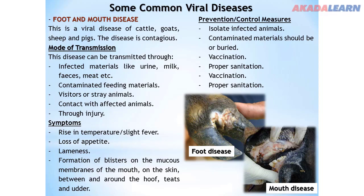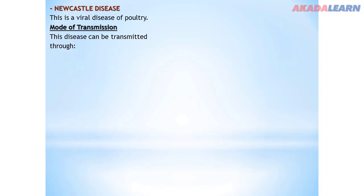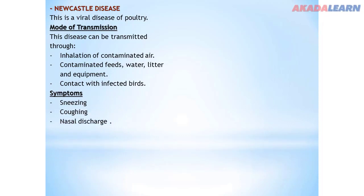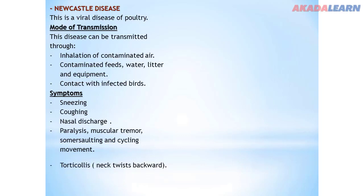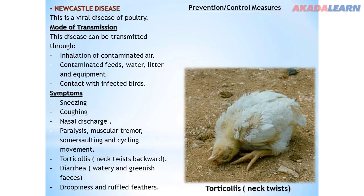Newcastle disease is a viral disease of poultry, and can also be found in rabbits. Modes of transmission: inhalation of contaminated air, contaminated feeds, water, litter, and equipment, and contact with infected birds. Symptoms: sneezing, coughing, nasal discharge, paralysis, muscular tremor, somersaulting and cycling movements, torticollis — where the neck twists backward — diarrhea, and droopiness with ruffled feathers. Control: isolate infected animals, bury contaminated materials, carry out vaccination and proper sanitation.